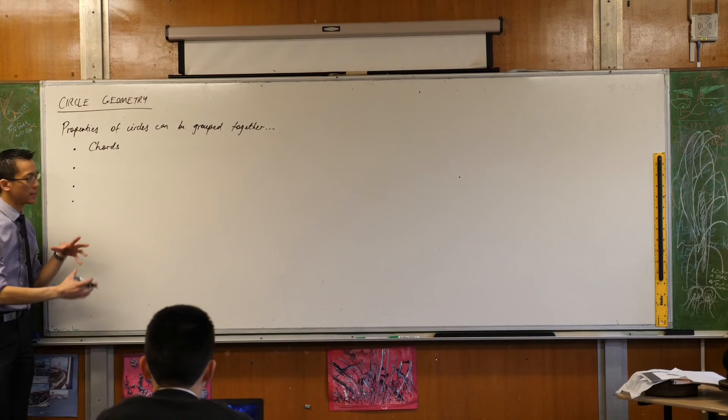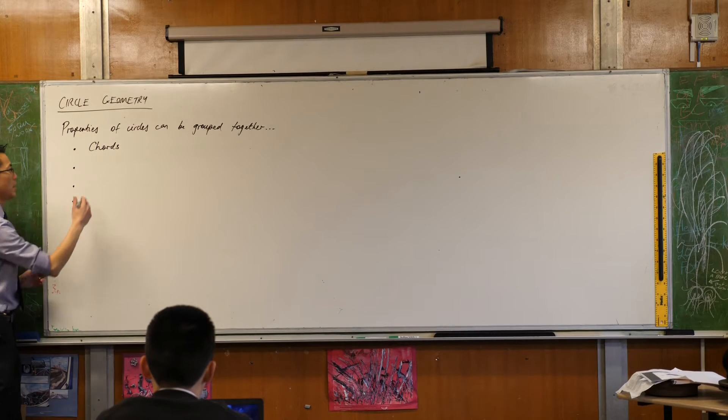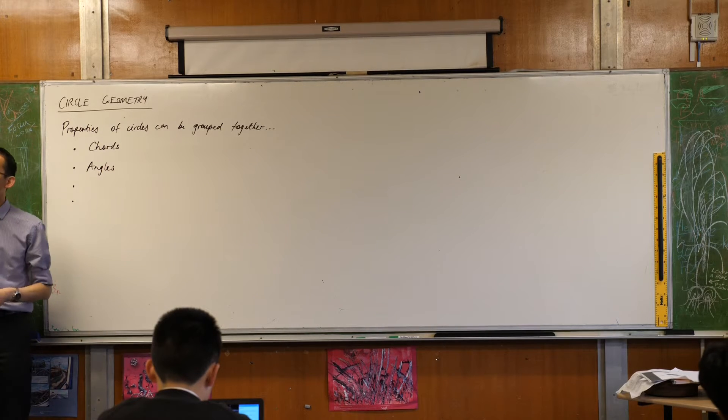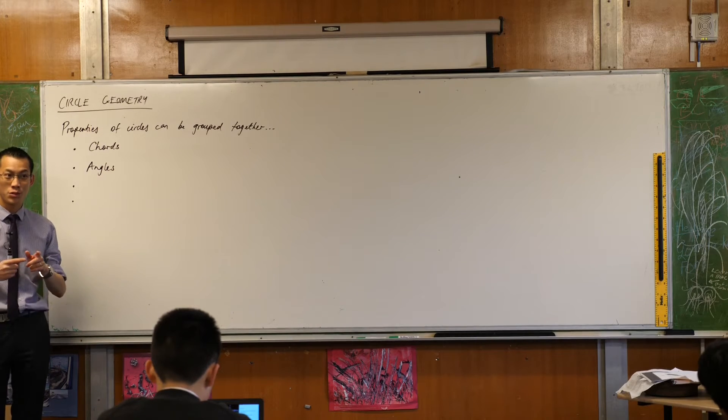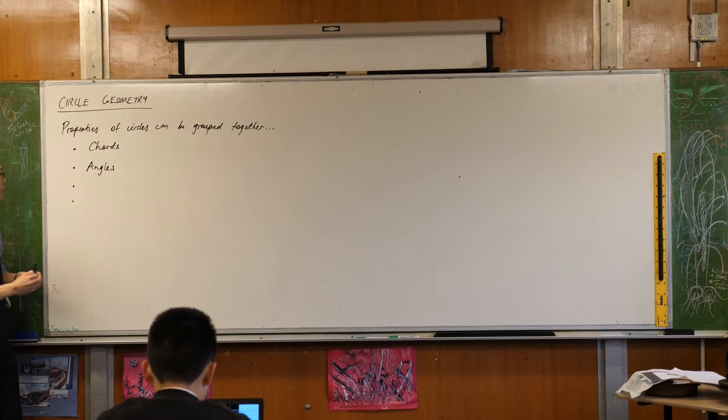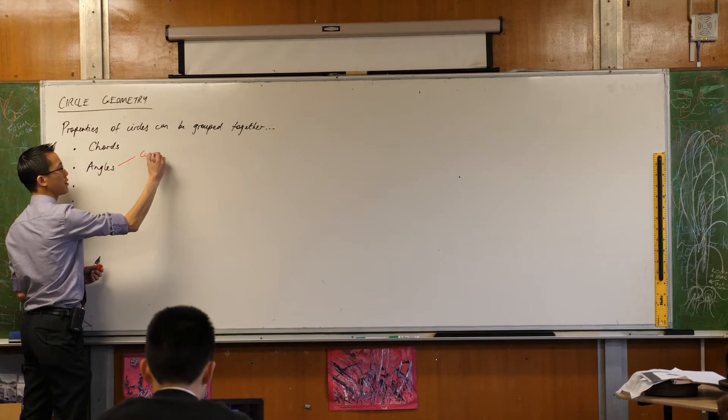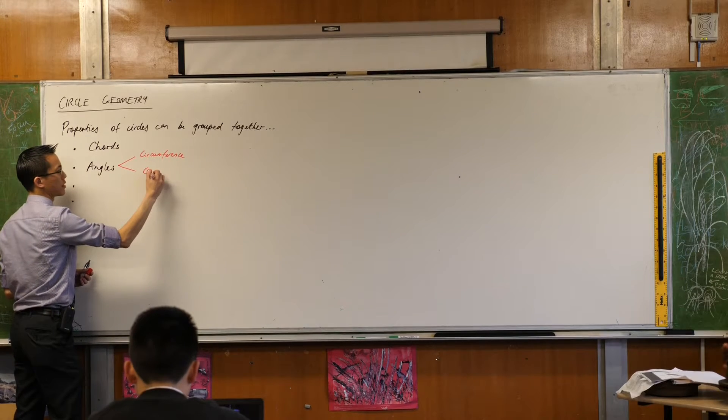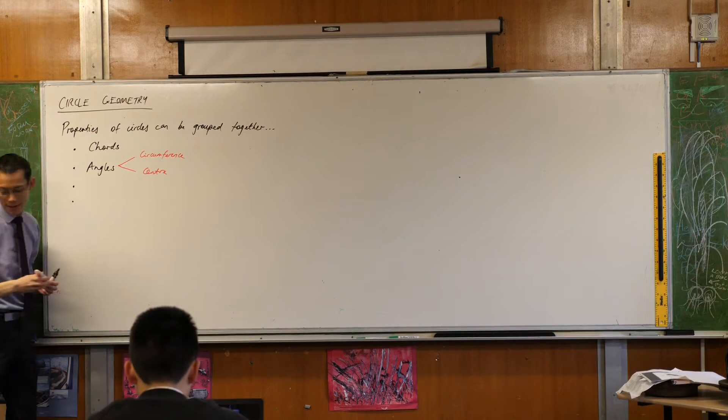After we look at chords, and some of these do overlap I should point out, we're going to focus on angles. Angles within a circle fall into two categories as well. They fall into angles on the circumference and angles at the center.